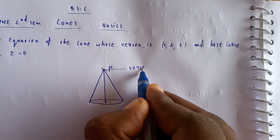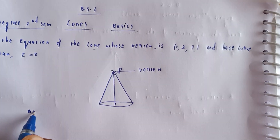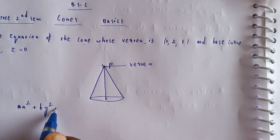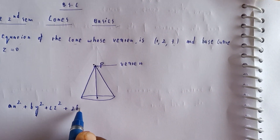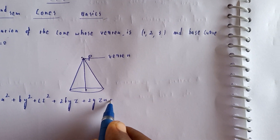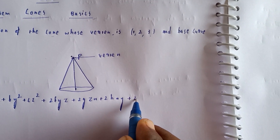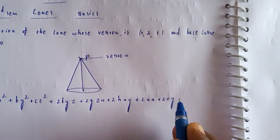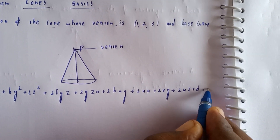Now, the cone equation is: ax² + by² + cz² + 2fyz + 2gzx + 2hxy + 2ux + 2vy + 2wz + d = 0.